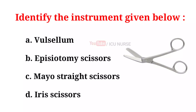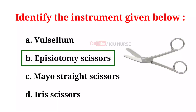Identify the instrument given below. A. Valsalva. B. Episiotomy scissors. C. Myometrial scissors. D. Iris scissors. And the correct answer is B. Episiotomy scissors.